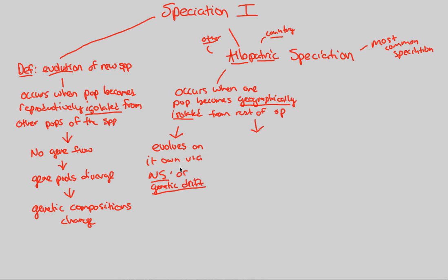Different traits will start to be more or less selected than others, as compared to the home population — the same-country population. We're now in a different country, so we have different evolution rules, different ways natural selection and genetic drift act on us, and thus we will evolve. In addition, allopatric speciation interrupts gene flow altogether, simply because of the geographical isolation.